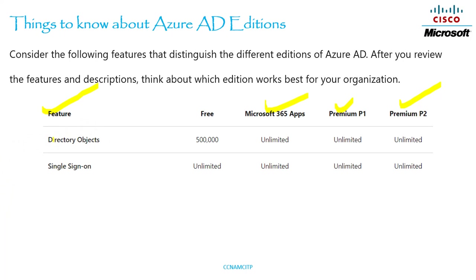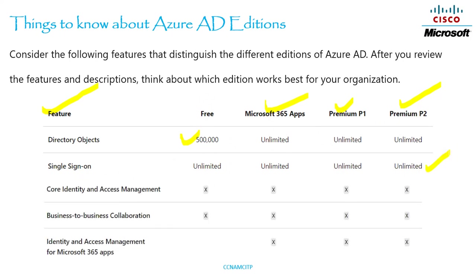If we talk about Directory Objects, the Free edition will give you a limited number of directory objects, and the rest of the editions provide unlimited. Similarly, if we look at the Single Sign-On feature, all editions have unlimited Single Sign-On support. A check mark indicates which features are supported by each edition.